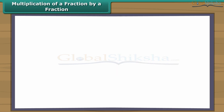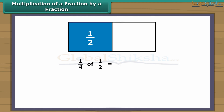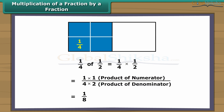Multiplication of a fraction by a fraction. Let us learn how to find the product of two fractions, like one-fourth of a half. The shaded portion in the figure represents half of the whole. Taking out this part and dividing it into four equal parts, each part represents one-fourth of a half. One-fourth of a half means one-fourth multiplied by one-half, which equals one-eighth. We multiply two fractions as the product of numerators over the product of denominators.